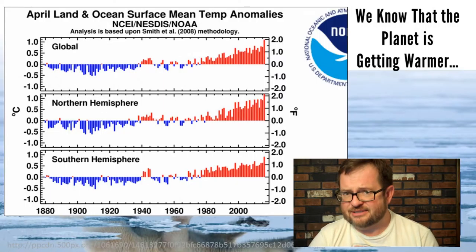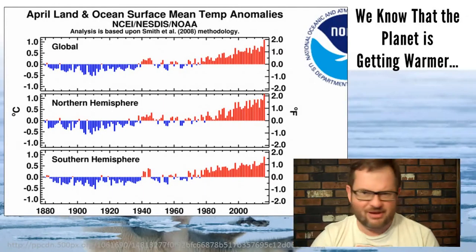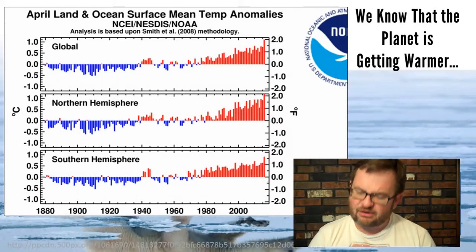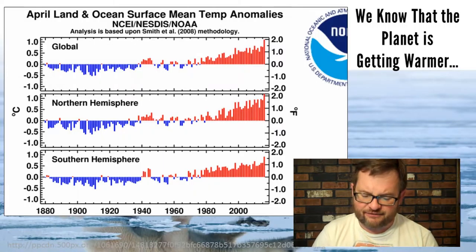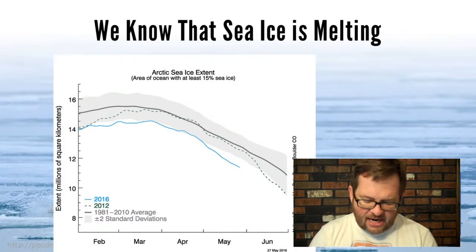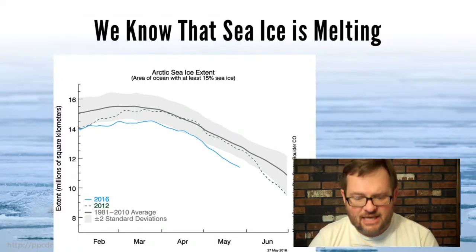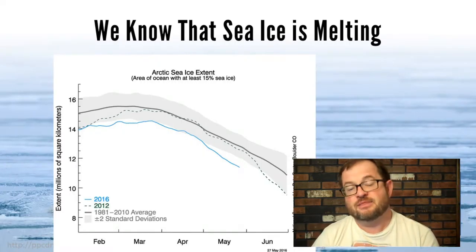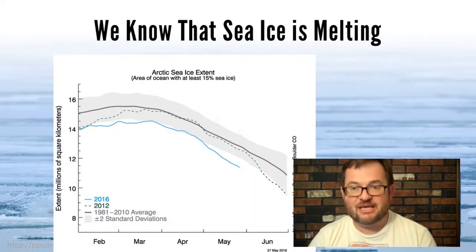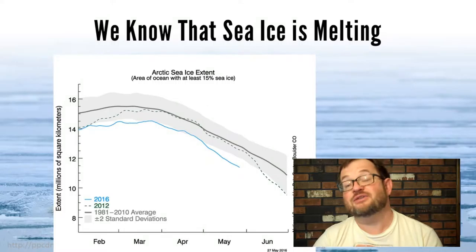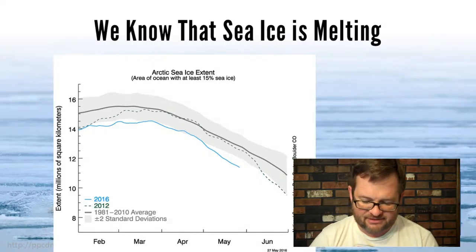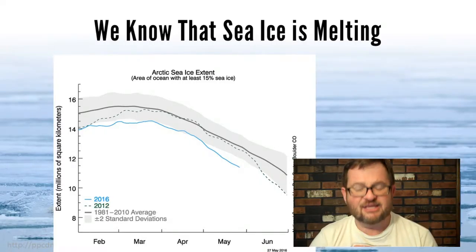We know the planet is getting warmer. Other records show this is part of a trend for the last 120 years. The planet is currently sitting at about 1.2 degrees Celsius above its long-term average temperature. We also know that sea ice is melting. A record of Arctic sea ice extent shows the 2016 curve well outside the normal range of melting. That's all very concerning, and it all comes from observations.